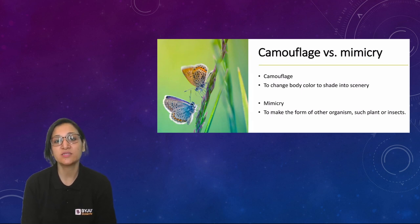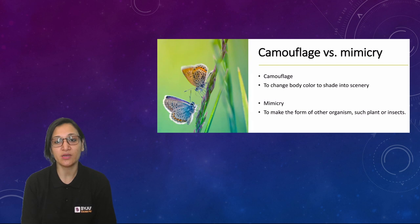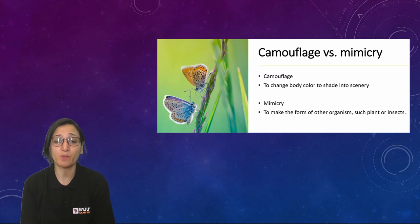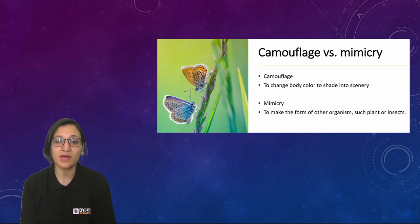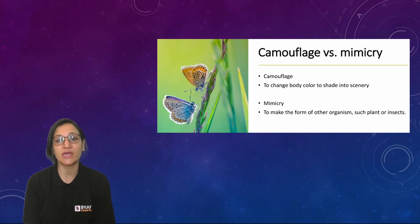Camouflage is when an organism blends into its background — it changes its body color to shade into the scenery. For example, if the background is dark-colored grass, or a snake in that setting, it is called camouflage.